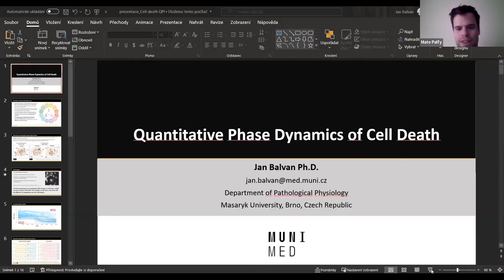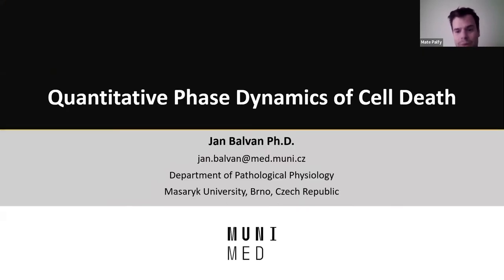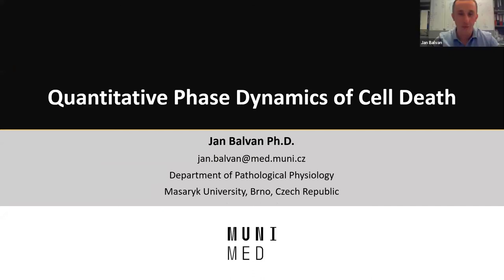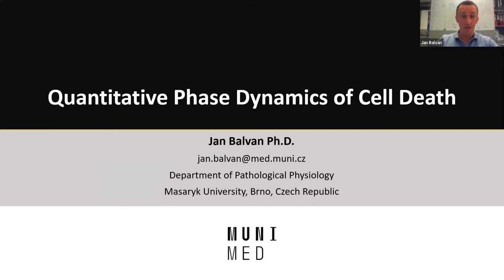Cell death is also critical for fighting infections and is associated with multiple diseases caused by deregulated or dysfunctional cell death signaling. We can basically distinguish two types of cell death. During lytic cell death, the plasma membrane ruptures, releasing the cellular content — including damage-associated molecular patterns (DAMPs) — into the extracellular environment. These DAMPs are sensed by neighboring cells and can lead to activation of immune cells or an immune response.